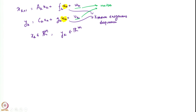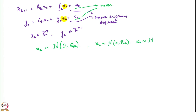Now, unlike in the past, we will assume that the noise has a specific distribution. We will assume that w_k's are distributed normally as N(0, Q_k), that the v's are distributed as N(0, R_k), and that the initial state x_0 is distributed as N(x̂_0, Σ_0).